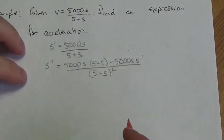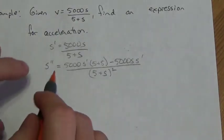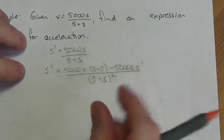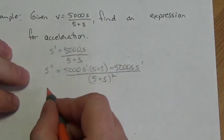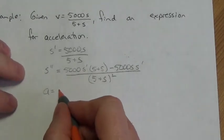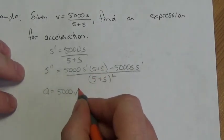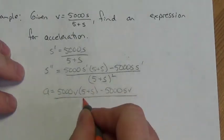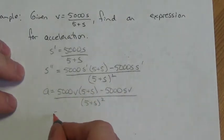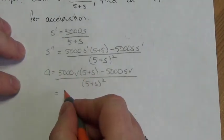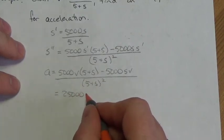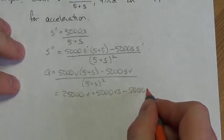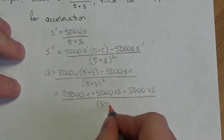Let's rewrite in terms of what we know those pieces represent. Acceleration equals 5000v(5 + s) minus 5000sv, all over (5 + s) squared. Multiplying that out gives 25000v + 5000vs minus 5000vs, all over (5 + s) squared.